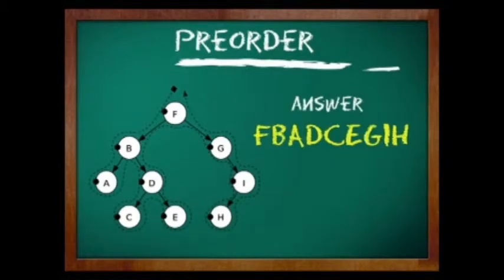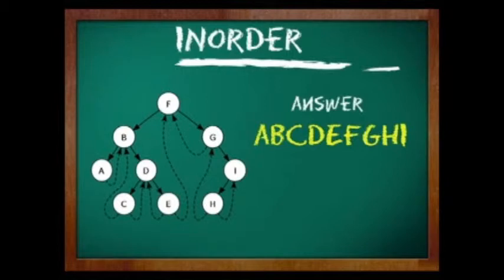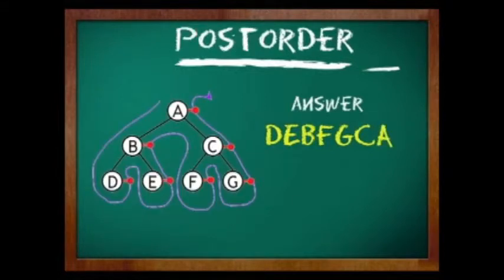Pre-order traversal uses the following syntax: first, visit the root node; second, traverse the left sub-tree; and third, traverse the right sub-tree. In-order traversal uses this syntax: first, traverse the left sub-tree; second, visit the root; and third, visit the right sub-tree. Post-order traversal uses this method: first, traverse the left sub-tree; second, traverse the right sub-tree; and third, visit the root.